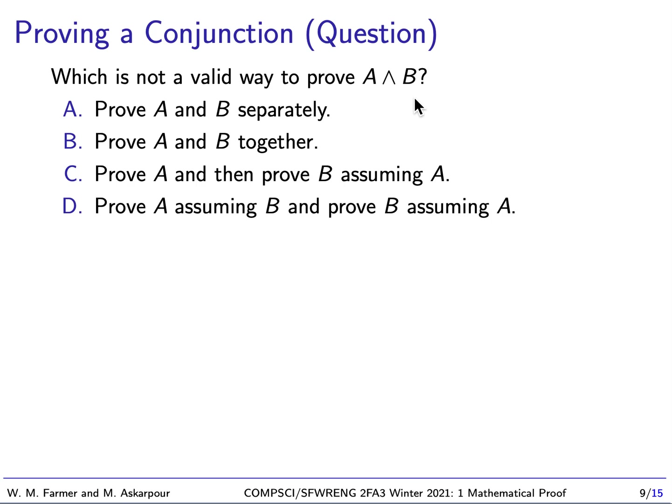So how do we prove this? We could prove A and B separately. That is a perfectly valid approach. We could prove them together. That would also be valid. We could prove A, and then after we prove A, we know A is true. Then we could prove B assuming that A is true. So that is also valid. D says we prove A assuming B, and then we prove B assuming A. This is not valid. This is basically circular reasoning. I assume something, and then I prove something from that, and then the thing I prove I assume, and then I prove my original assumption from that. This is not valid reasoning.